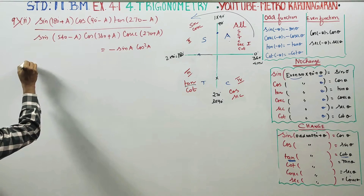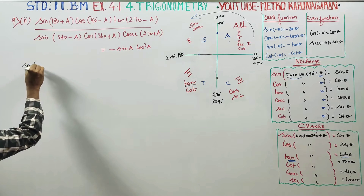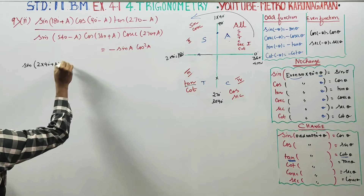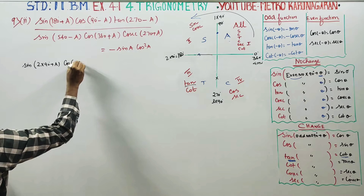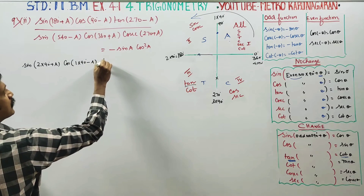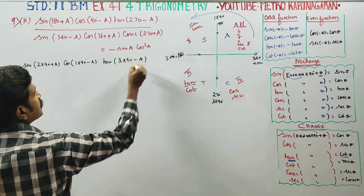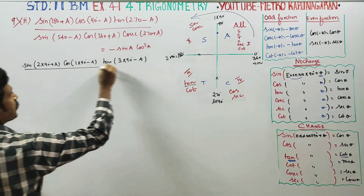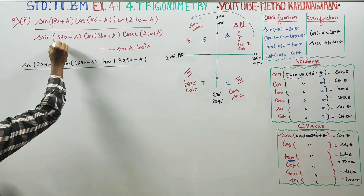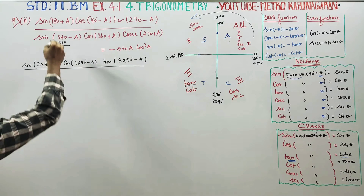Numerator update simply way: sin 180, 2 into 90 plus A, cos 90, 1 into 90 minus A. Ten, 270 is 3 into 90 minus A. By 540, 540 is 60 is minus, 360 is a minus x.